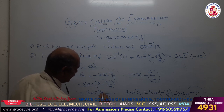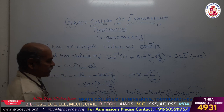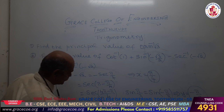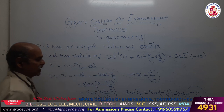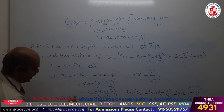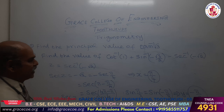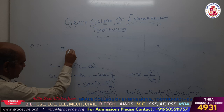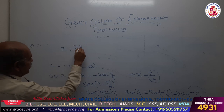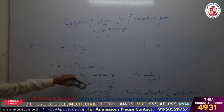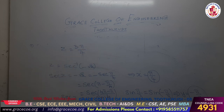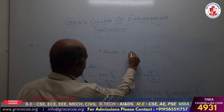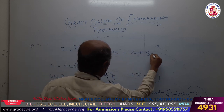So z is equal to 3 pi by 4. Now we need to find the value of the full expression. The required value is x plus y plus z, which combines all three values.